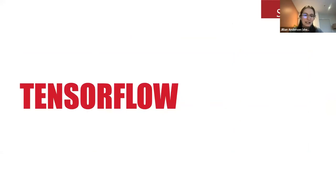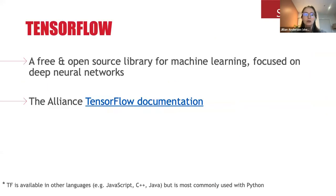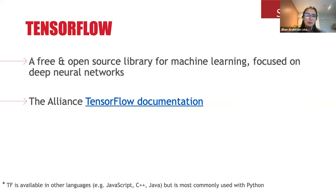The next piece is TensorFlow. TensorFlow is a Google-developed software library that touts itself as an end-to-end machine learning platform. More practically speaking, TensorFlow is an open source library that allows us to train and use deep learning models — specifically deep neural networks — for a variety of tasks. That's what a lot of people use it for, and that's what we're going to talk about today.